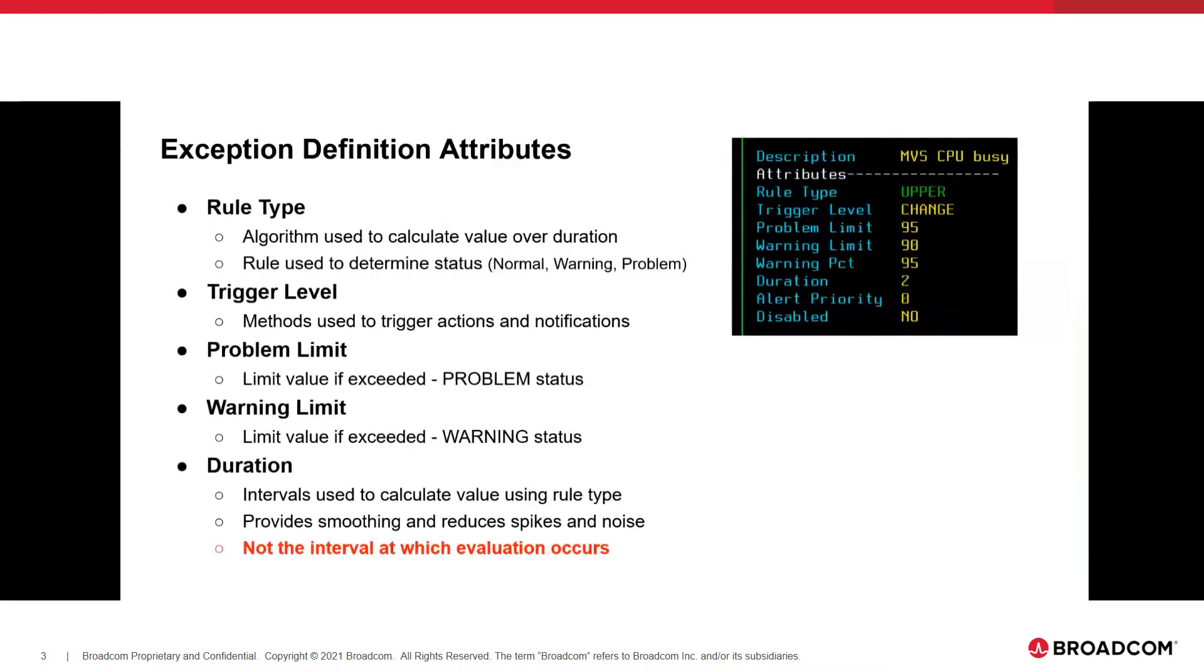The next keyword there is trigger level. Different from rule type, trigger level is basically the method used to trigger actions and notifications. After we assign a value and a status, then how do I determine whether I want to be told about it? The problem limit is just the value, if exceeded, will be determined to be a problem status. Warning, of course, is if that limit is exceeded, that would define a warning status.